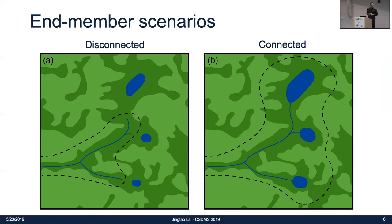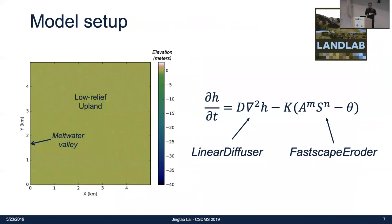My question in this study is whether the disconnected case versus the connected case can give us very different paths of landscape evolution. To do that, I built a numerical model using the LandLab platform. The evolution of topography is dominated by a stream-power fluvial erosion law and a linear diffuser for hillslope processes. On the left boundary is an open boundary representing the meltwater valley, 40 meters deep. The major part of the model domain is a flat surface with some random noise representing the low-relief upland. The other three boundaries — top, bottom, and right — are closed, so all water can only flow out from the left boundary.